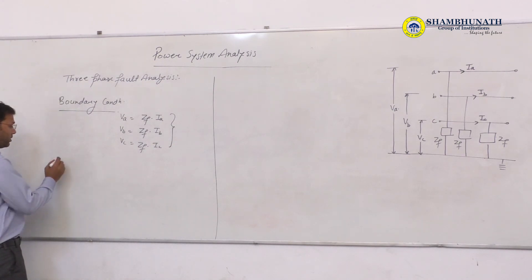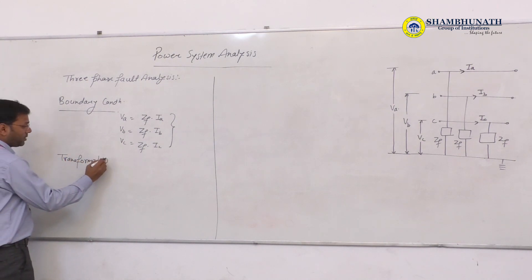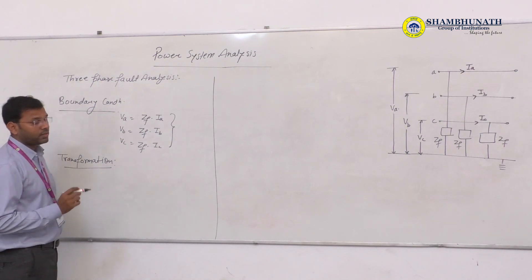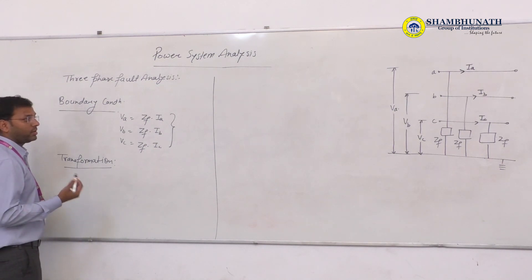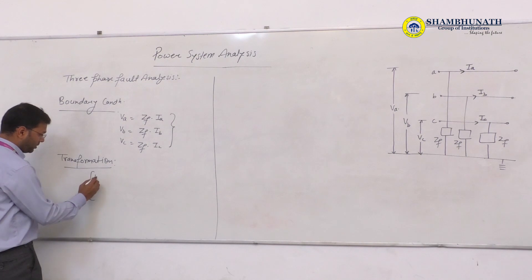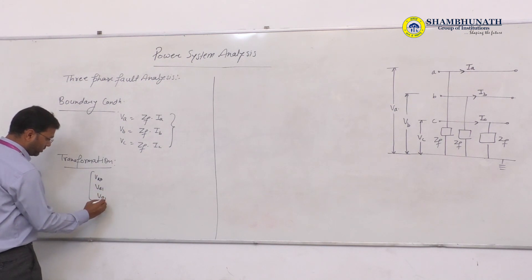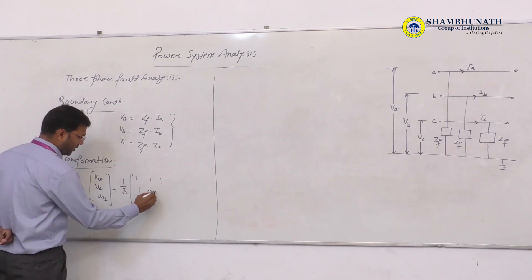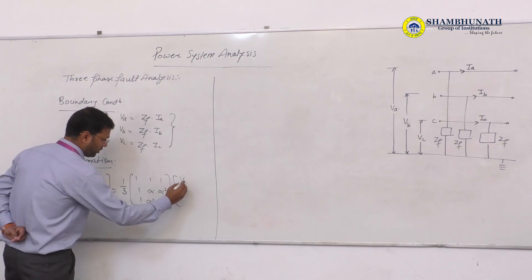After stating the boundary conditions, we apply the transformation. Here we are applying the synthesis equations. In transformation we use the synthesis equations, which can be written either in matrix form or in equation form. Writing in matrix form: VA equals a 1-by-3 matrix with elements involving 1, alpha, and alpha-squared applied to the sequence voltage components VA0, VA1, and VA2.